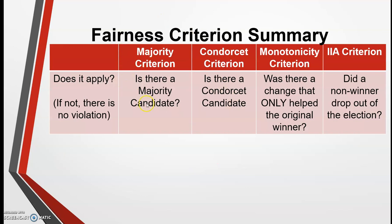Let's look at a summary table of our fairness criteria. Essentially, this is what you're going to have to do when you're trying to determine whether or not a scenario violates a certain criterion. The first thing you have to do is identify — does the criterion even apply? This is the hypothesis part. First, ask yourself: is there a majority candidate? If there is, then you test to see if the majority criterion is violated. If there's not a majority candidate, then the majority criterion does not apply and you have nothing to worry about.